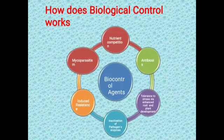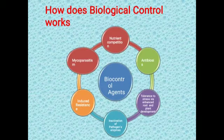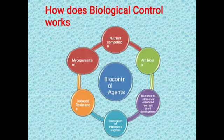How does biological control work? What is the actual mechanism of biocontrol agents? The mechanisms include: nutrient competition, antibiosis, tolerance to stress via enhanced root and plant development, inactivation of pathogen enzymes, induced resistance, and mycoparasitism. Through these mechanisms, most pathogens are controlled by biocontrol agents.